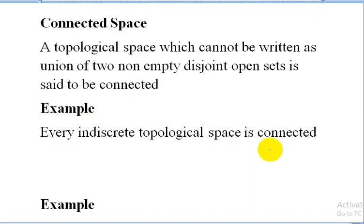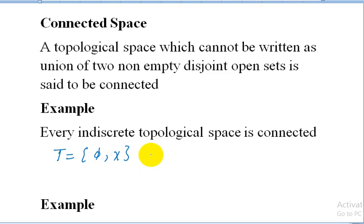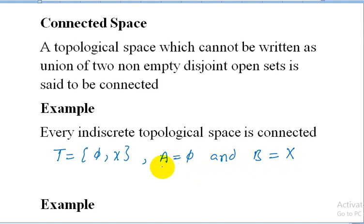For example, every indiscrete topological space is connected. In an indiscrete topological space, tau equals {phi, X}. For this topological space we cannot find two open sets A and B such that A intersection B equals phi and A union B equals X. If we take A equals phi and B equals X, then A union B equals X and A intersection B equals phi, but A is not non-empty. For a disconnected space, A and B must both be non-empty. So the indiscrete topological space is connected.